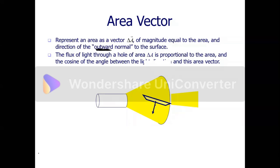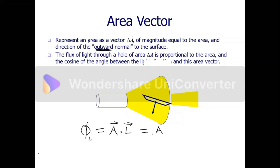I hope you have come across the concept of dot product from mathematics. The flux of any quantity is the dot product of the area vector and that particular quantity. If it is the electric field, the flux will just be a dot product of the area vector and the electric field. From mathematics, the dot product is just the magnitude of one times the magnitude of the other times the cosine of the angle between them.